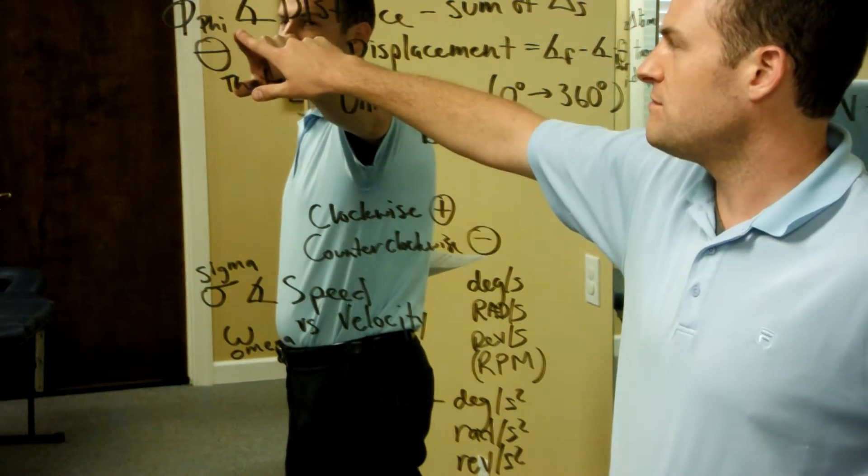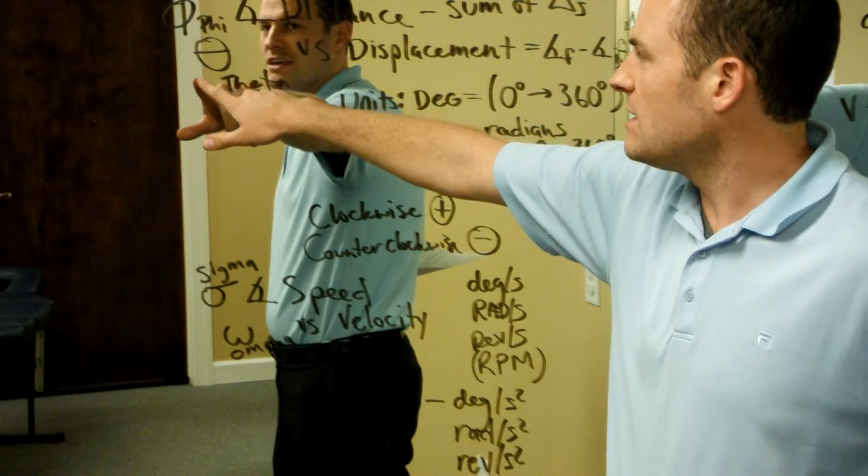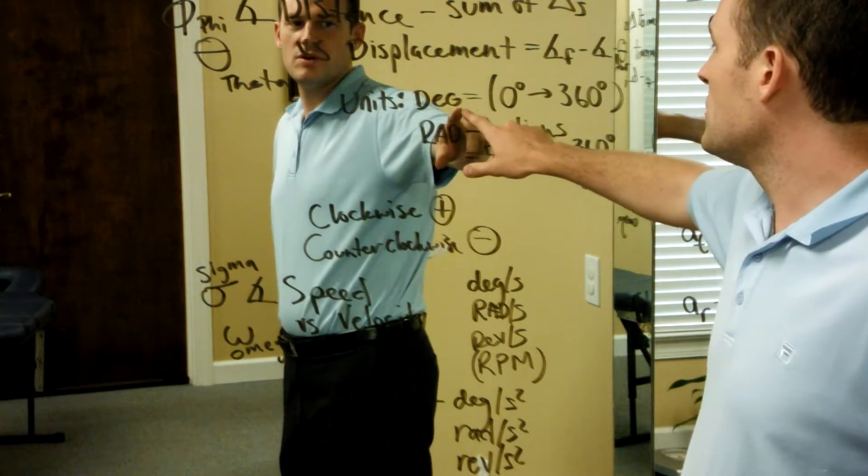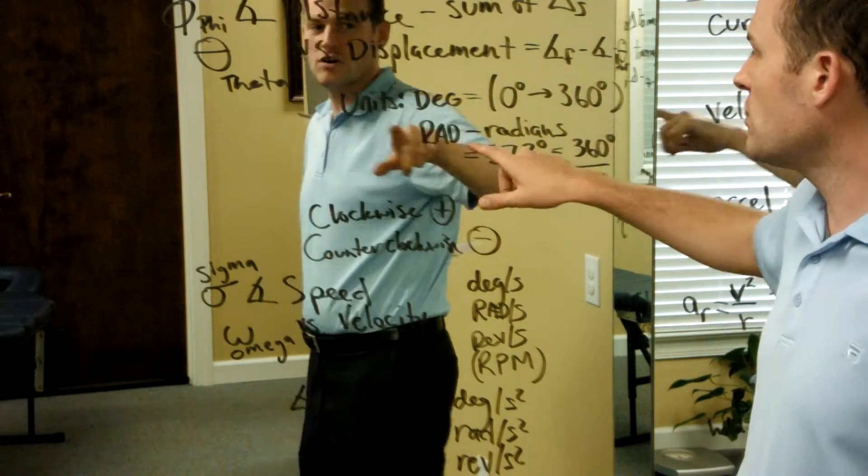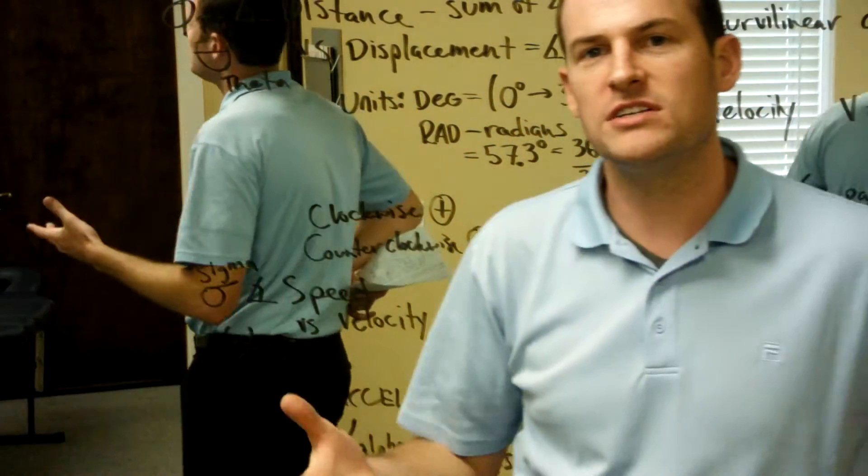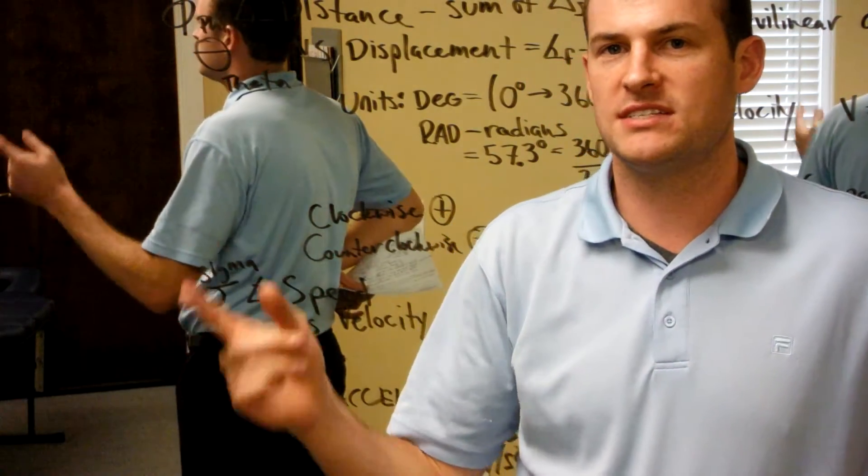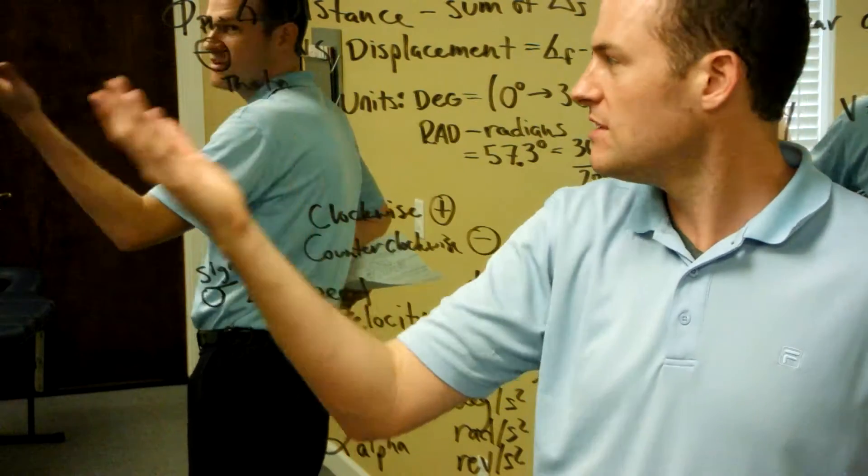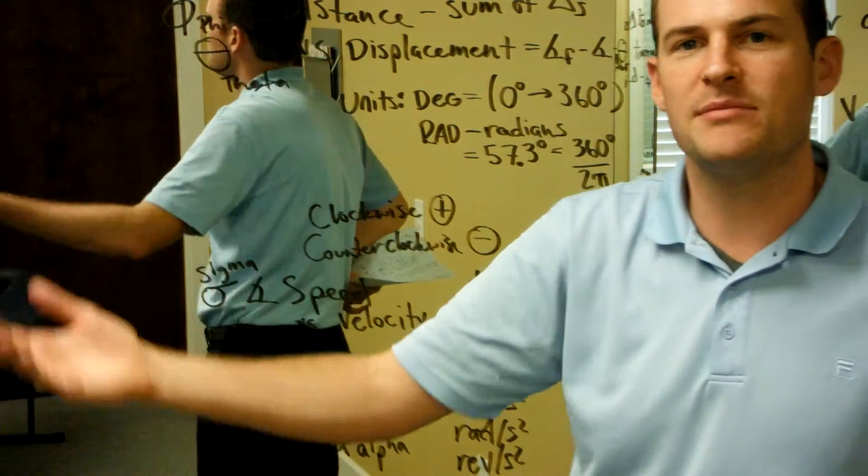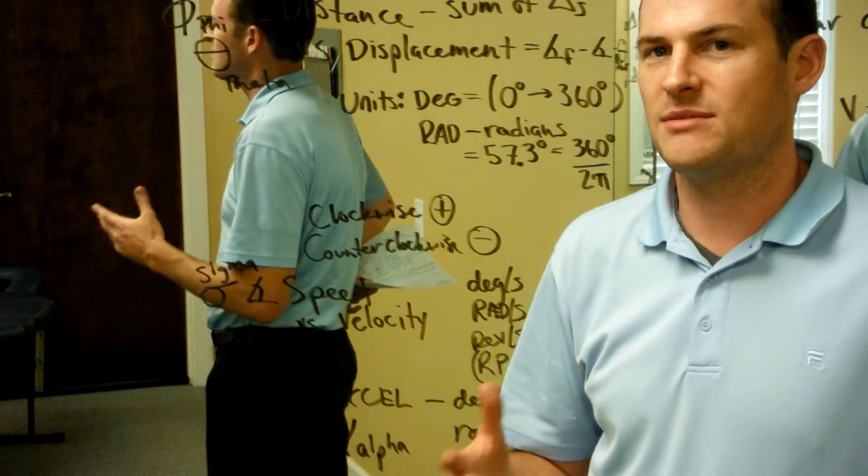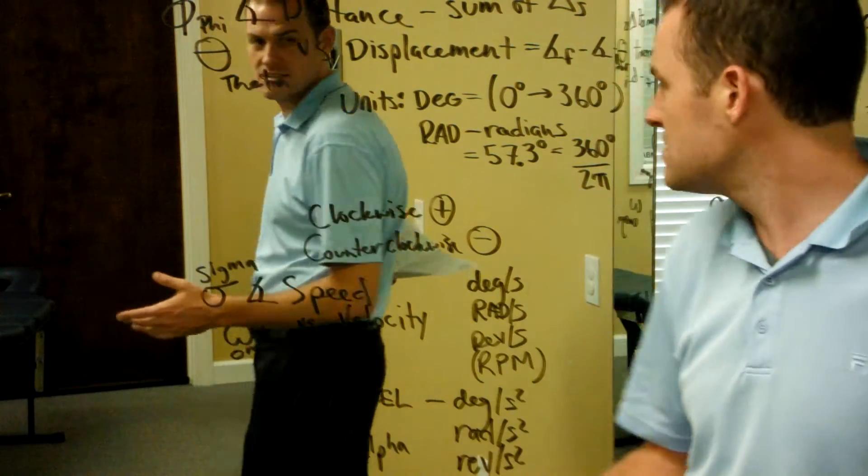Angular distance unit is phi. Angular displacement unit is theta. We are using the overall units of degrees, radians, or revolutions. Degrees, you know, are from zero to 360. That would be an entire single revolution. We can talk about range of motion most commonly in degrees. When we're mathematically computing angular kinematics, we're using what's called radians.